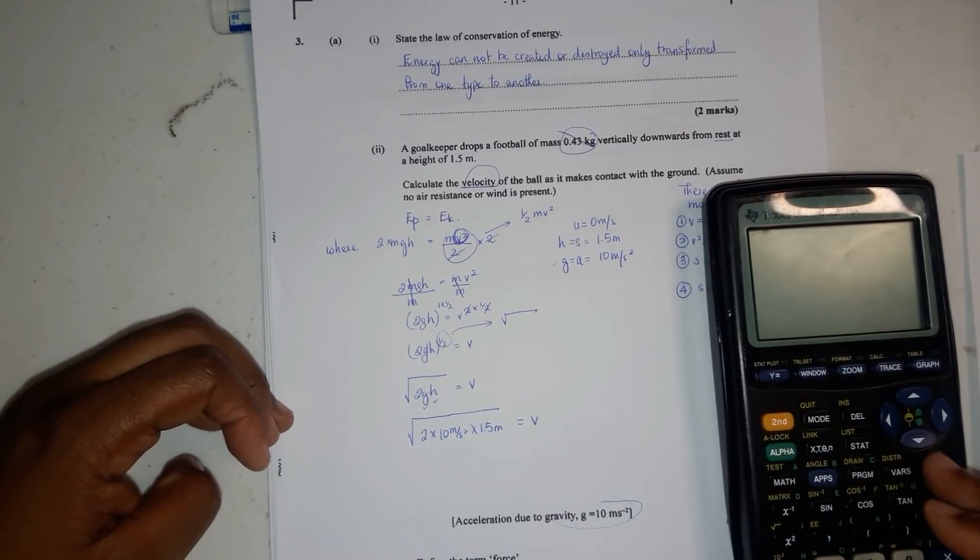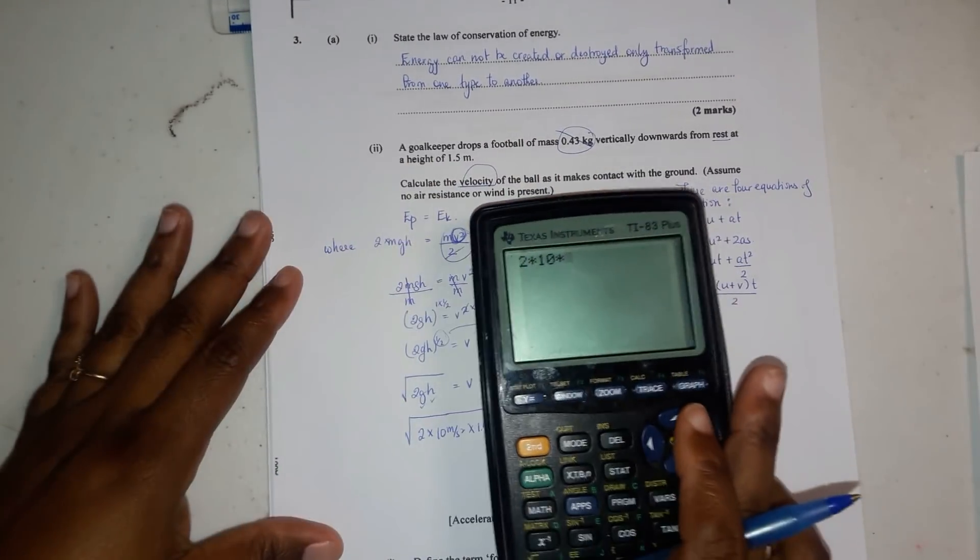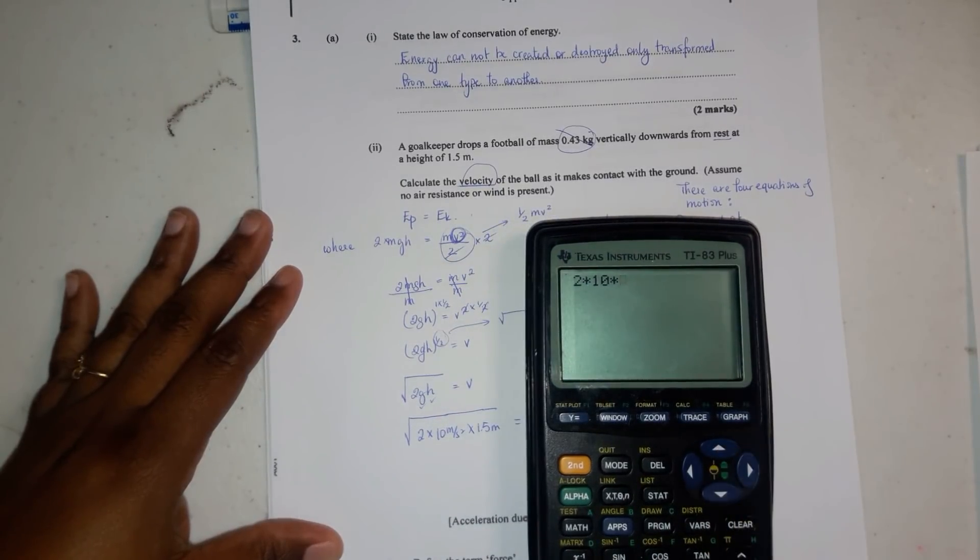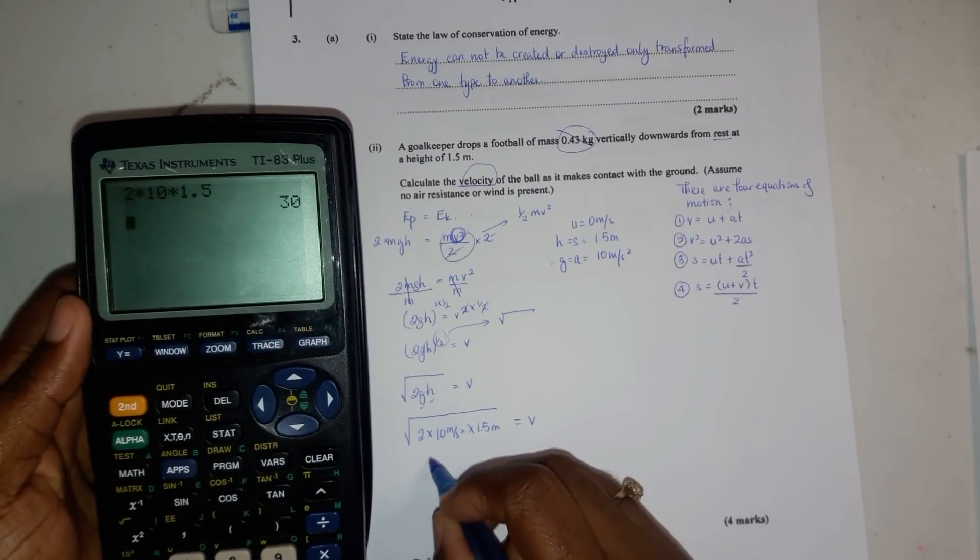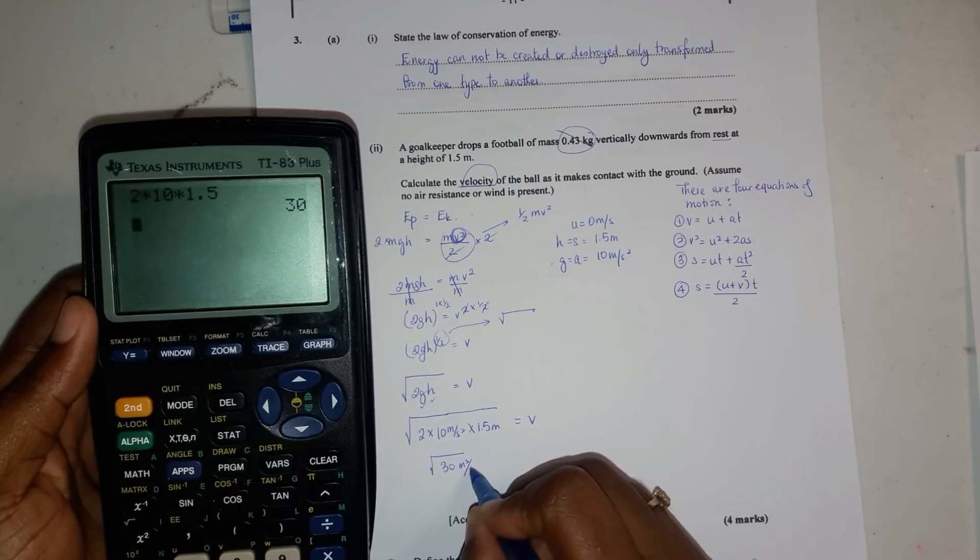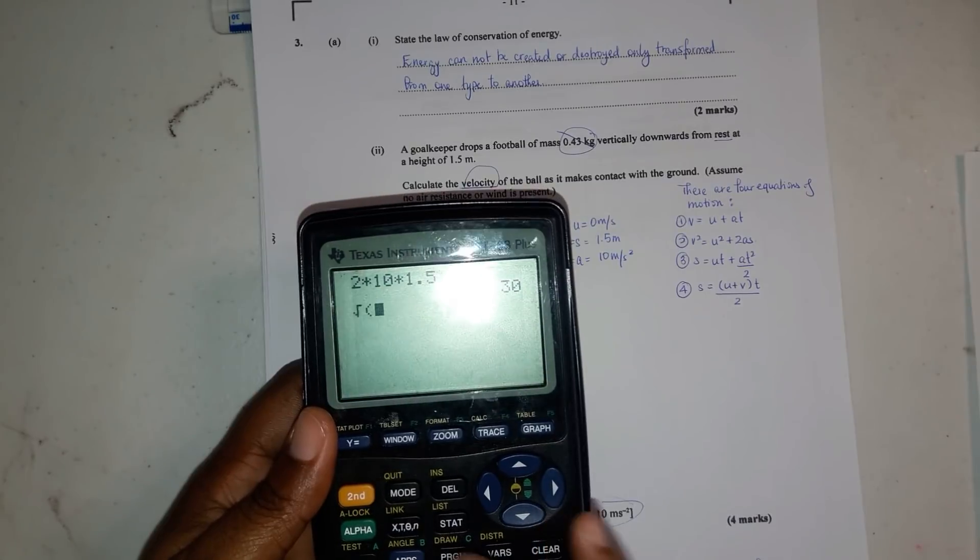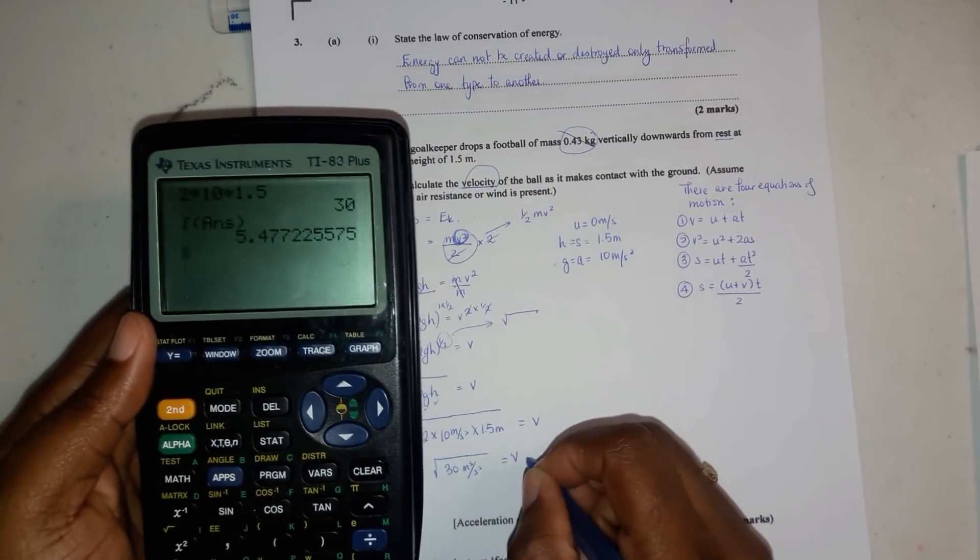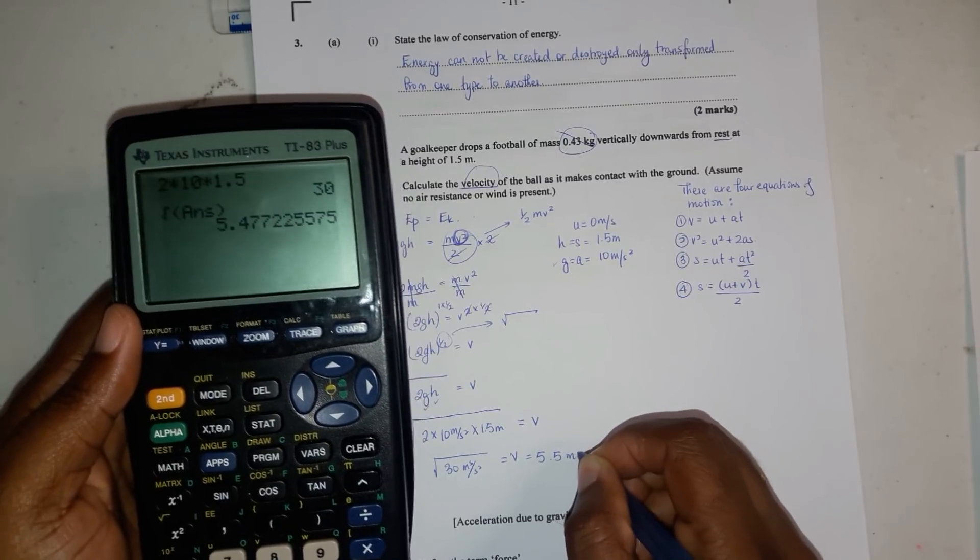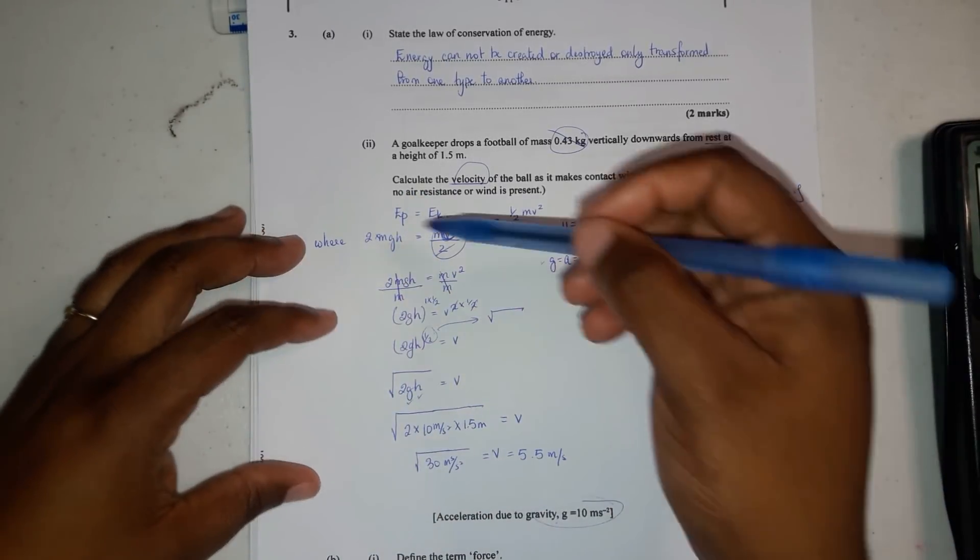So we have 2 times 10 times 1.5, that gives us 30. Square root of 30 meters squared over second squared equals v. The square root of that gives us the velocity 5.5 meters per second.